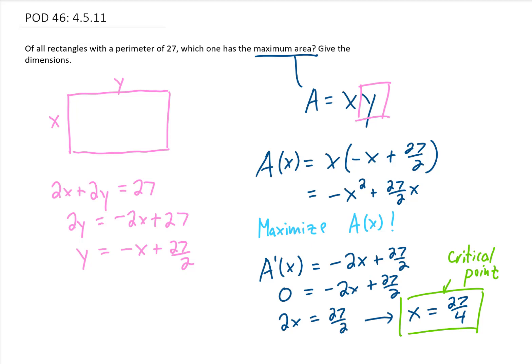And presumably this critical point gives us the x value, that's the dimension, the width of this rectangle, that will maximize our area. If we draw a new picture of what this rectangle looks like, this side x is going to be 27 fourths long. This side is going to be 27 fourths long.